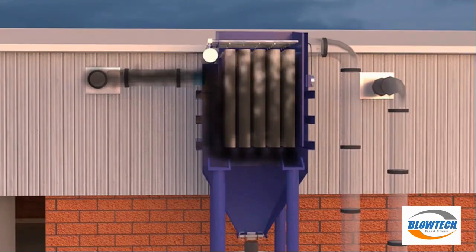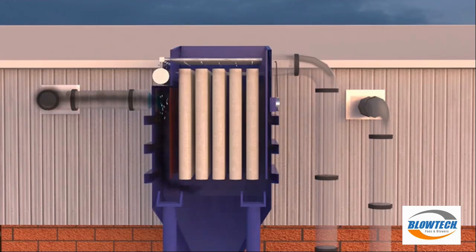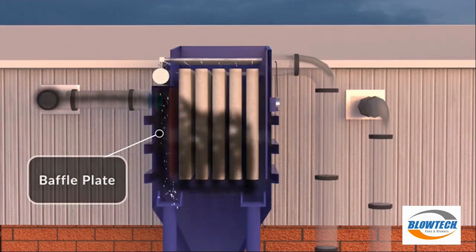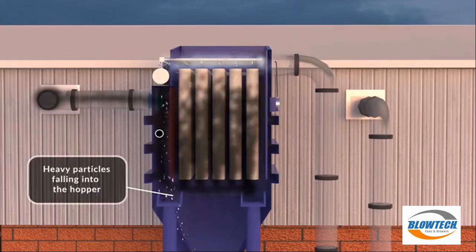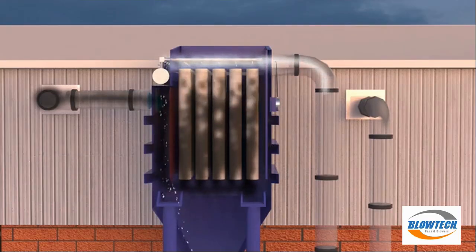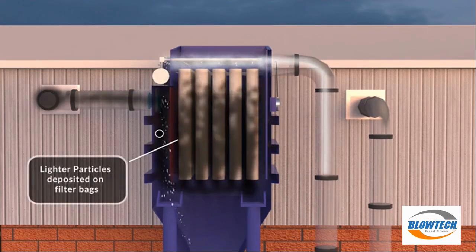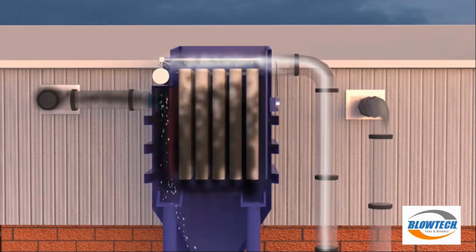The air passes through the filter bags. Due to the use of a baffle plate, the heavy particles fall down into the hopper, and the lighter dust particles get deposited on the exterior surface of the bags.